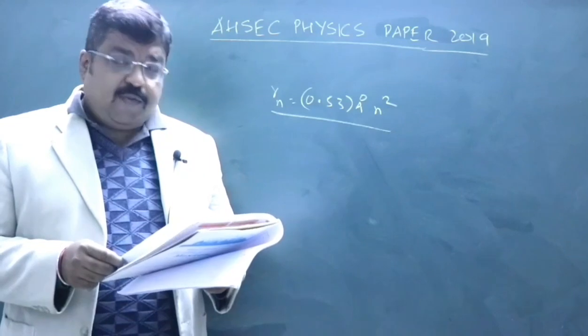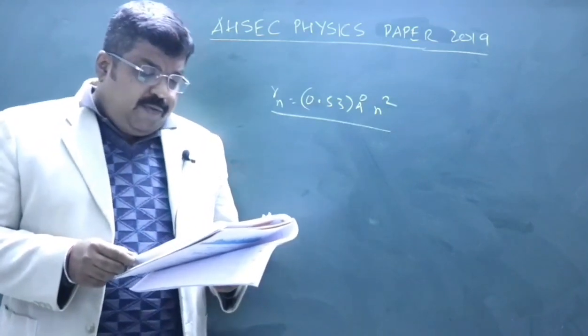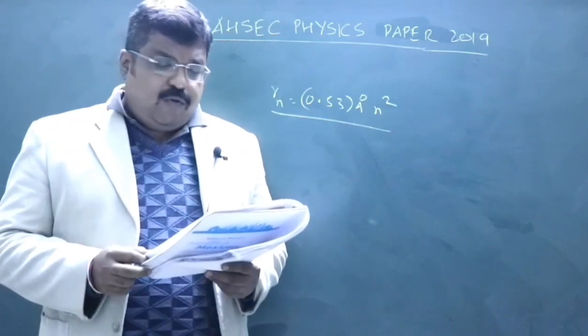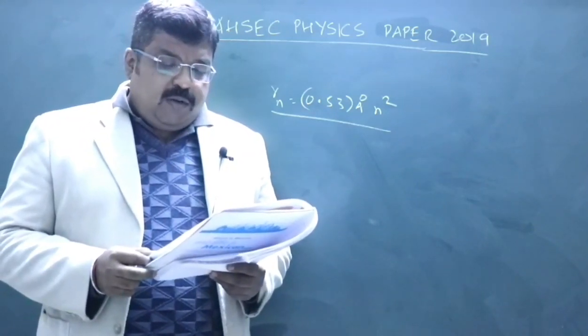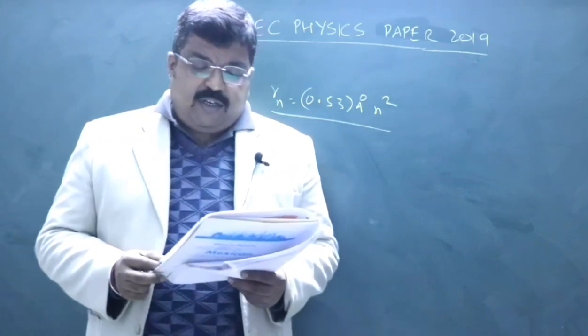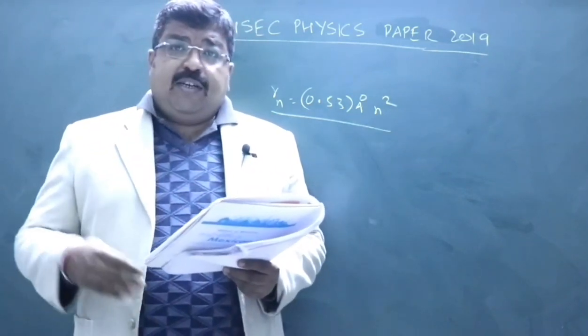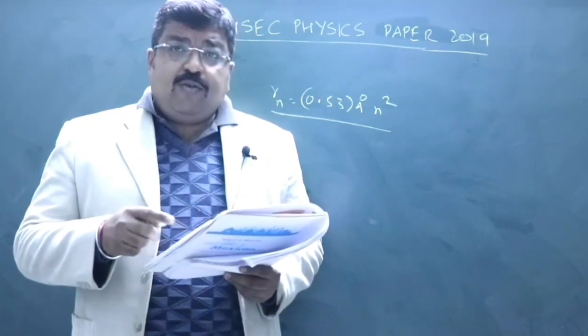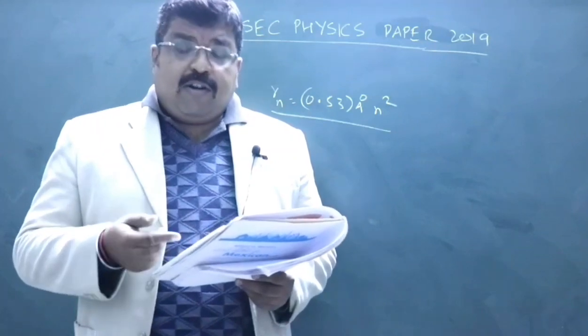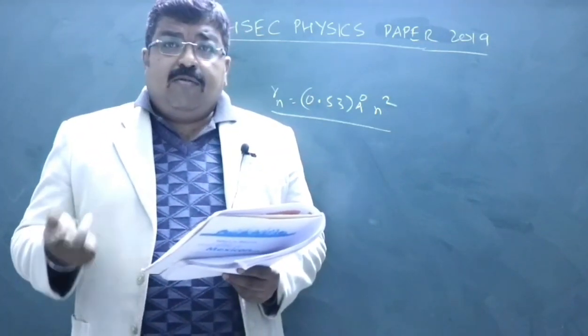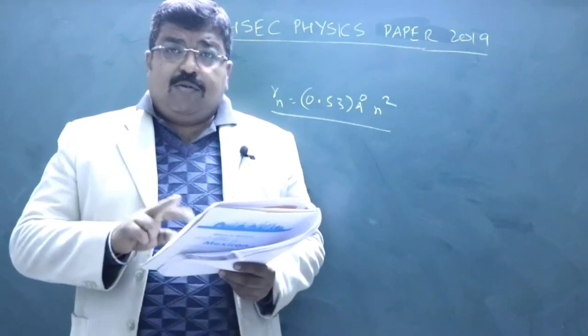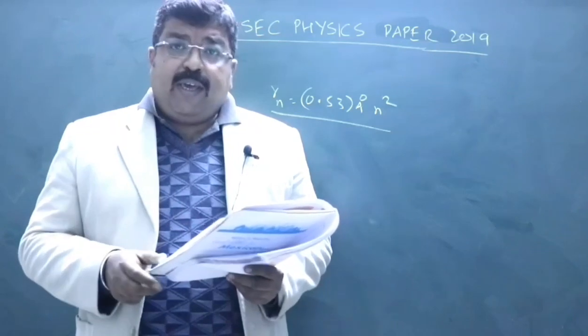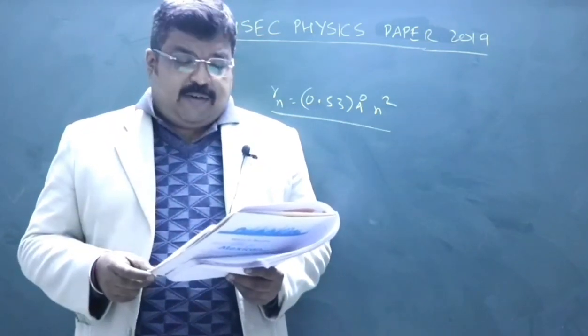If the work function of two metals X and Y is 4.17 electron volt and 8.24 times 10 to the minus 19 joule, then for which metal lesser amount of energy will be required? Greater the work function, greater amount of energy will be required. You have to convert those quantities into same unit so that you can compare. It is material Y which will require more energy because its work function is greater.